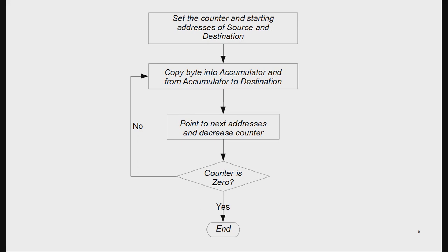In the flowchart, we first set the counter — the counter will be five in our case, and we pick this counter from memory. Then the source and destination addresses are set. We take a byte from the source into the accumulator, copy from accumulator to destination, then increment the addresses and decrement the counter. When the counter is zero we stop; if not zero we repeat this action.